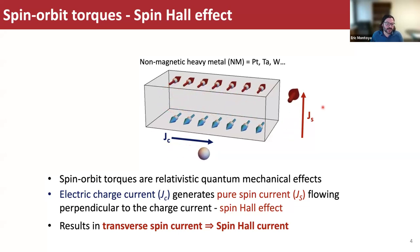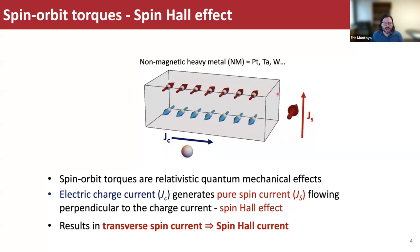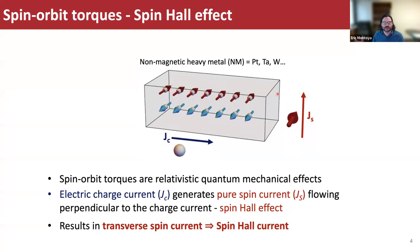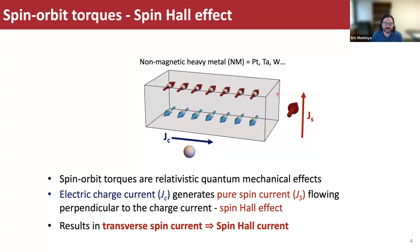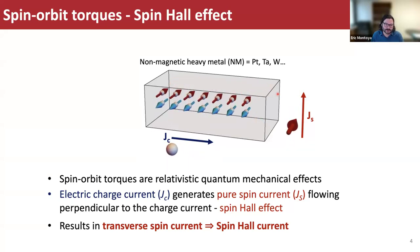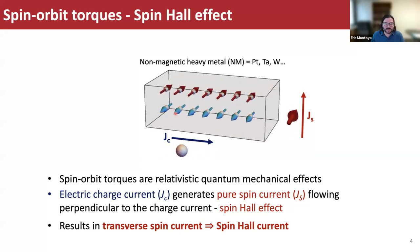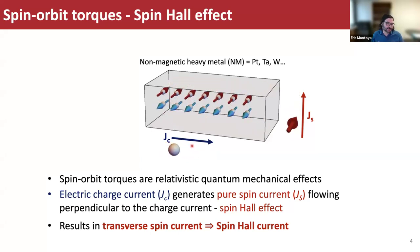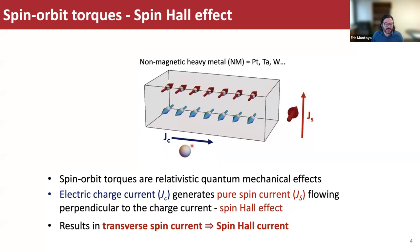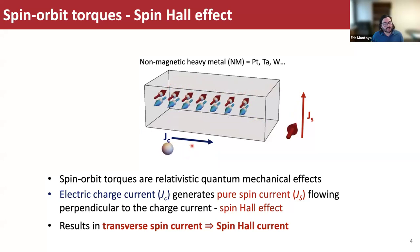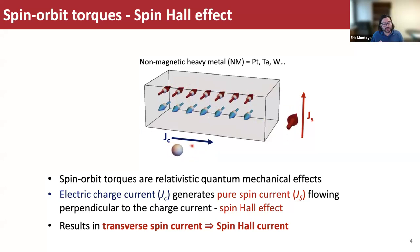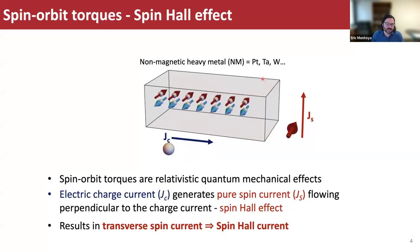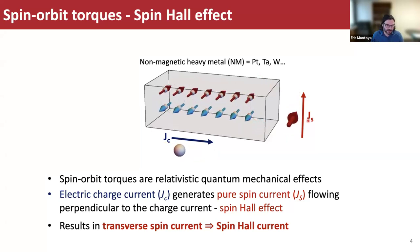The spin hall effect, the planar hall effect, and the anomalous hall effect that lead to torque are all intrinsically related and are all examples of spin orbit torque. For the spin hall effect: if you have a non-magnetic heavy metal with a large spin orbit interaction, and an electric charge current flowing from left to right, this generates a pure spin current in a transverse direction perpendicular to the charge current. This is the spin hall effect.